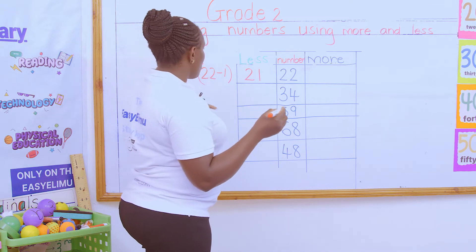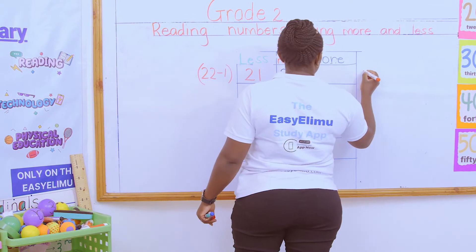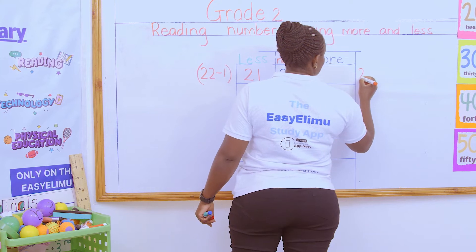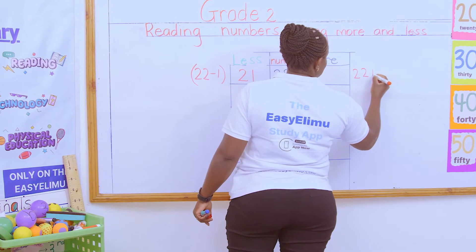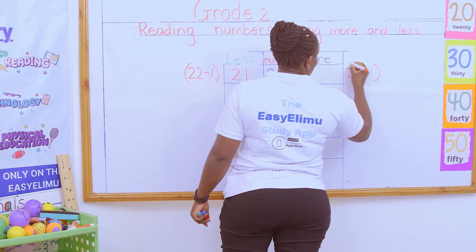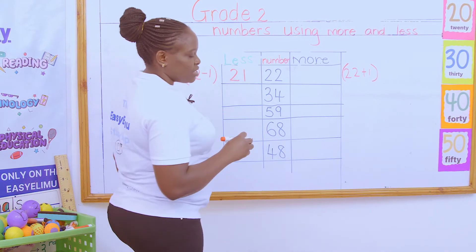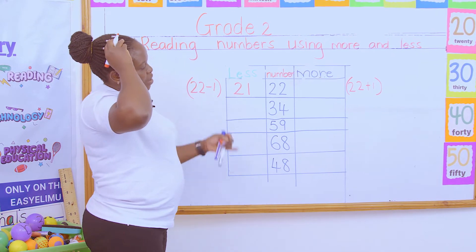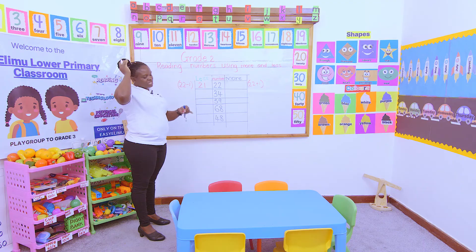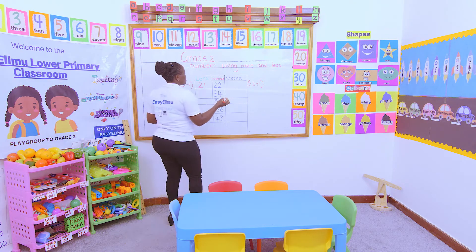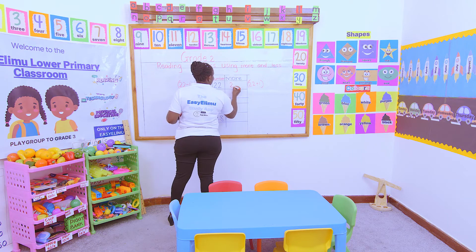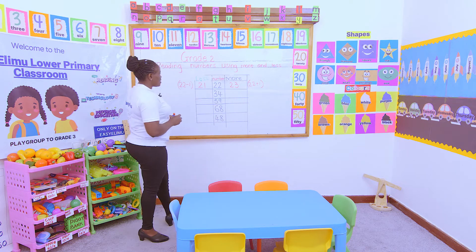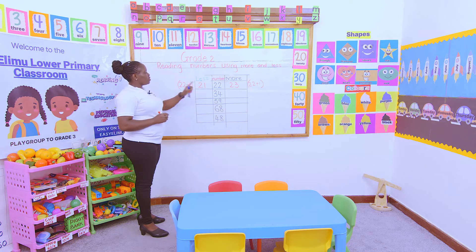What of 22 more? 22 more will be 22 plus 1. Counting forward: 22 in the head, 1 finger out — we say 22, 23. So, my missing number here is 23. Very good.